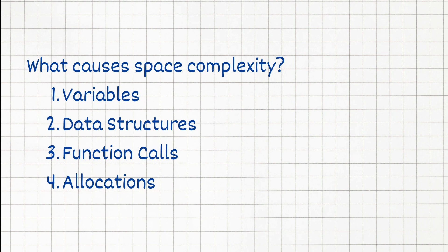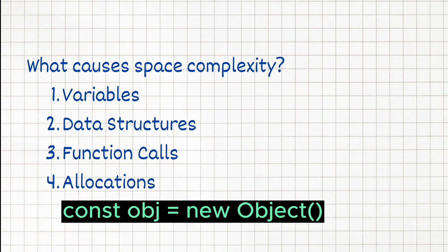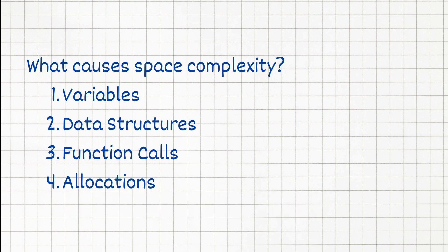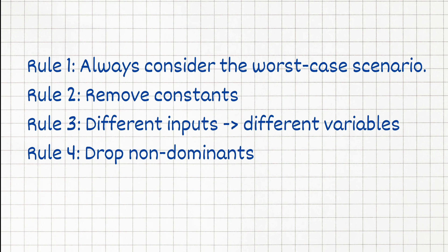And lastly we have allocations. Dynamic memory allocations, such as creating objects or arrays dynamically, using keywords like new. They also contribute to space complexity. And remember when analyzing space complexity, we follow similar principles as we took time complexity. We always consider the worst case scenario.